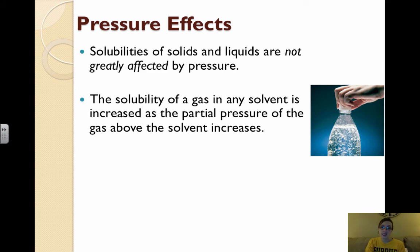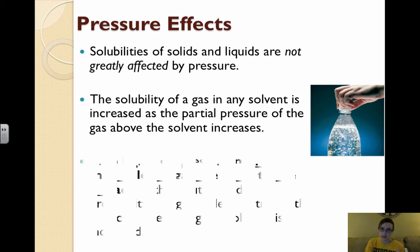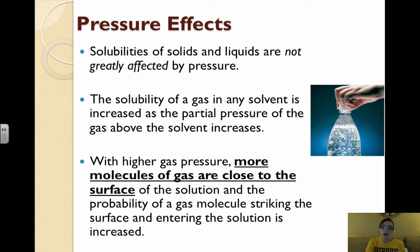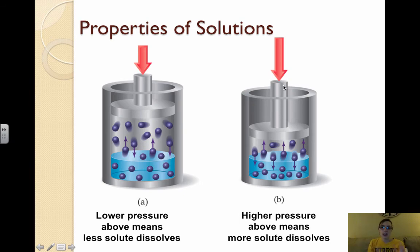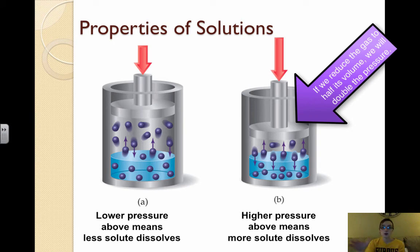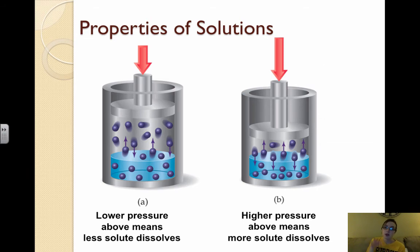However, the solubility of a gas increases as the pressure of the gas above the solvent increases. With higher gas pressure, more molecules are close to the surface of the solution, and the probability of a gas molecule striking the surface and entering the solution is increased. In a container with a piston, at lower pressure there are fewer collisions above the liquid, so less solute dissolves. If we push the piston down, we get more collisions between gas molecules and the liquid surface, so more gas dissolves — higher pressure means more gas solute will dissolve.